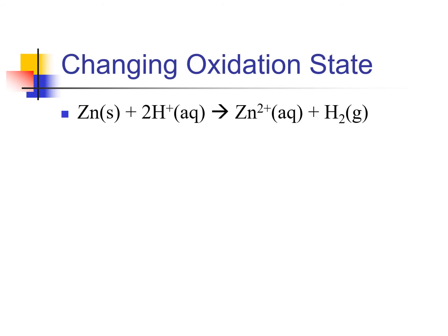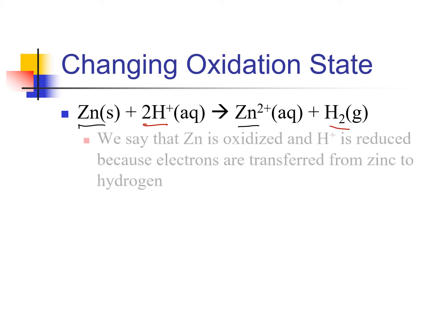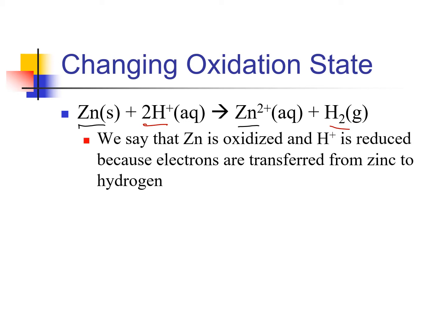Here's an example of a classic reaction we'll see over and over in this unit. We can clearly see changes in charge: zinc going from neutral to plus two, and hydrogen ions going from plus one to neutral. We would say that the zinc is oxidized and the hydrogen is reduced, and that electrons are actually being transferred from the zinc to the hydrogen.